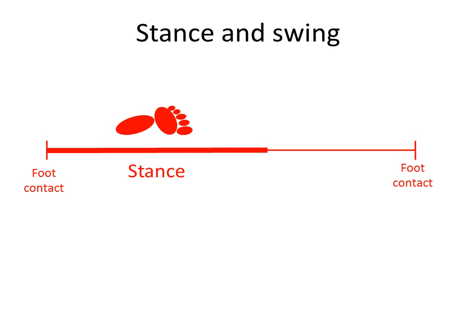Stance ends, naturally enough, with foot off. After foot off is the swing phase, when the limb is moved forwards ready for the next stride. Foot contact and foot off are called gait events.